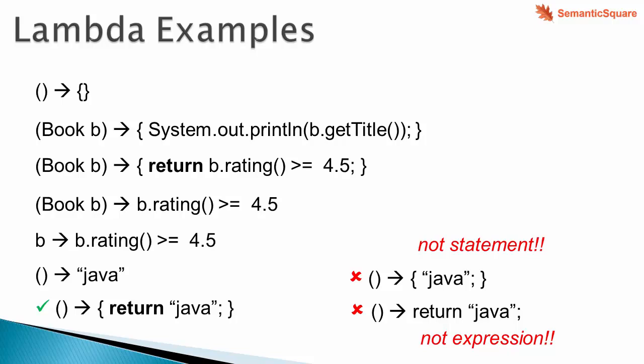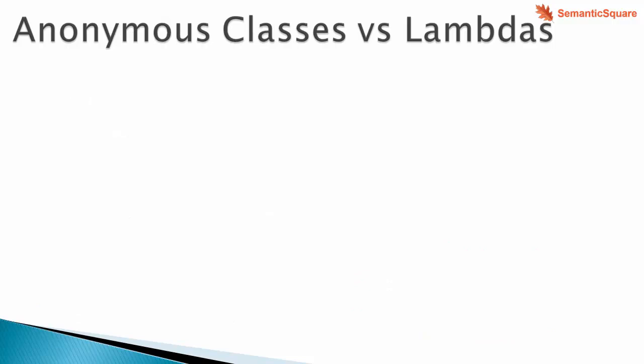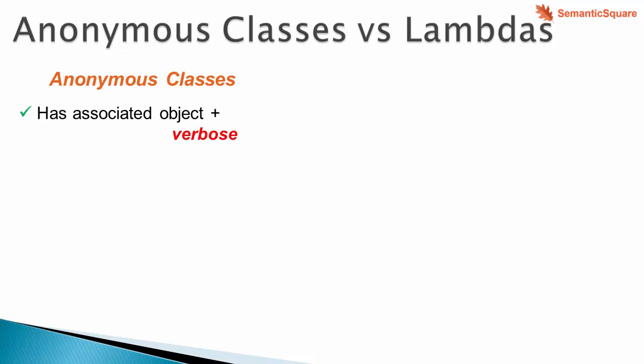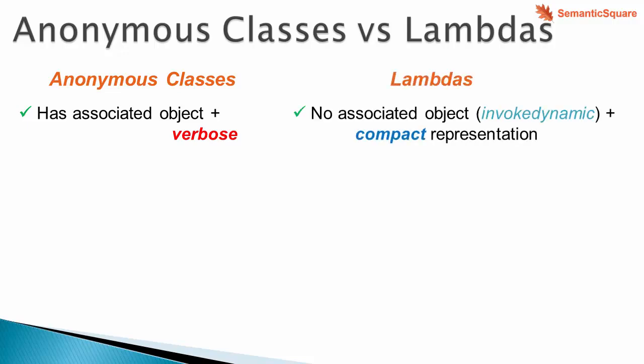Before Java 8, anonymous classes played the role of lambdas. So what are the differences between the two? With an anonymous class we have an associated object, so there is the overhead of loading the class. It is also verbose — we have to use the new keyword followed by the super type name and the method names. With a lambda there is no associated object, as it is implemented differently and is based on the bytecode instruction called invokedynamic, making it more efficient since we don't have to create an object.